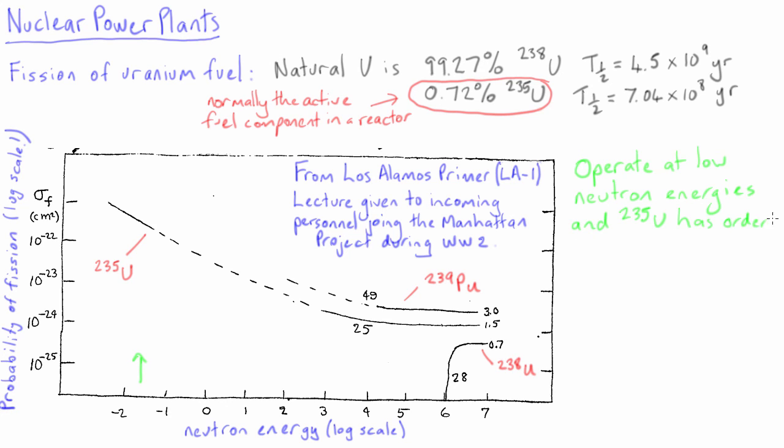This higher probability for fission of uranium-235 is the reason that most nuclear reactors in the world today require uranium enriched in uranium-235.